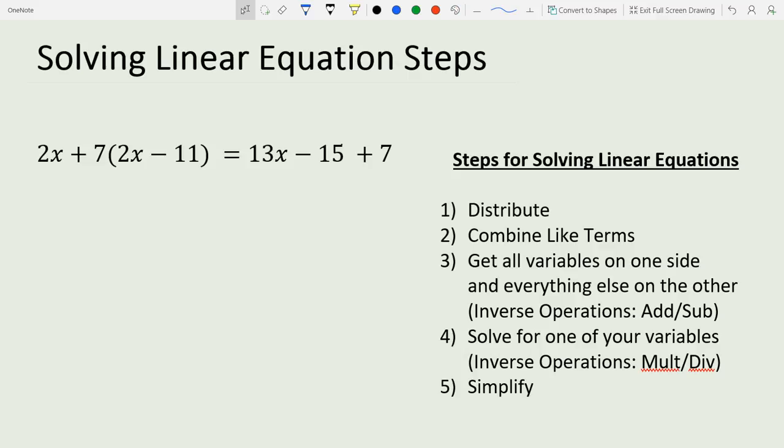When we look at this problem, we're going to work through these steps and do everything that we can for each. Some might not apply and that's okay. Our first step says to distribute. We have a distribution here, so let's distribute. We're multiplying everything inside the parentheses by this positive 7. The 2x doesn't change, then 7 times 2x is positive 14x, and 7 times negative 11 is negative 77. We drop everything else down without changing it.